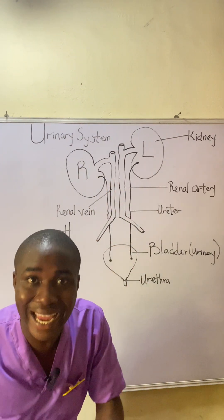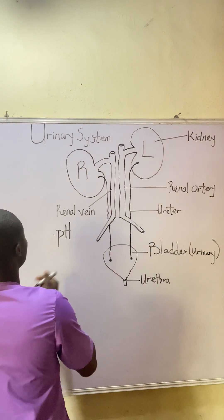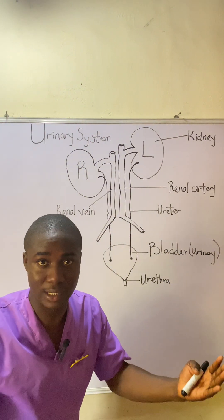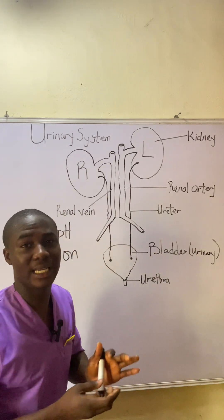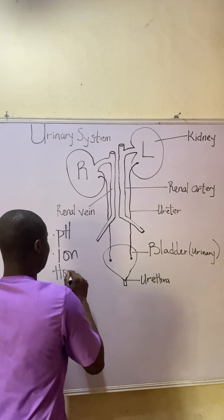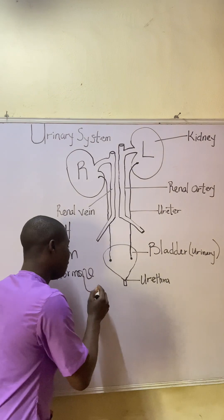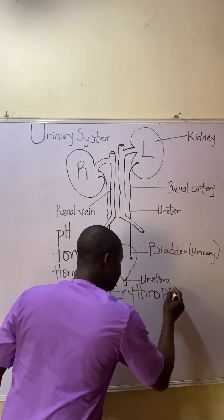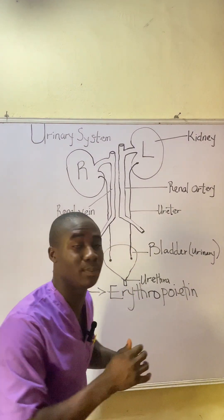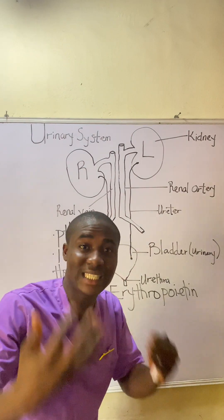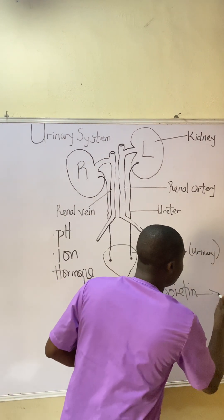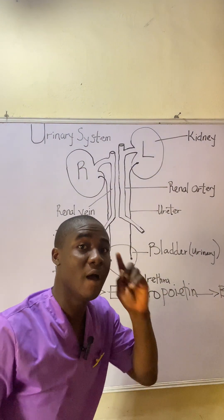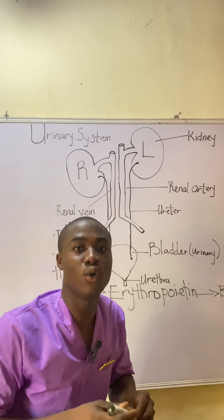Not only pH — the kidney also helps to maintain ion balance. We have various ions in the body, so the kidney helps to maintain electrolytes, because electrolytes are ions. Another function of the kidney is that it helps to produce hormones in the body. The key hormone produced by the kidney is called erythropoietin. This hormone helps to stimulate the production of bone marrow, which in turn forms red blood cells. Red blood cells help to transport oxygen around the body.